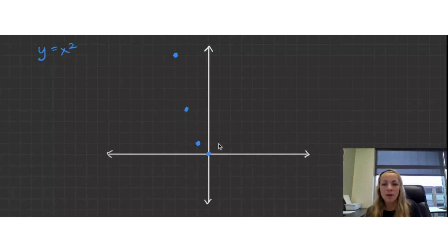1 squared is 1. 2 squared is 4. And we're starting to see that symmetry in case you didn't notice that already. So 3 squared is 9. I'm going to try to do my best job to draw a nice curve through this. And this right here is y equals x squared.